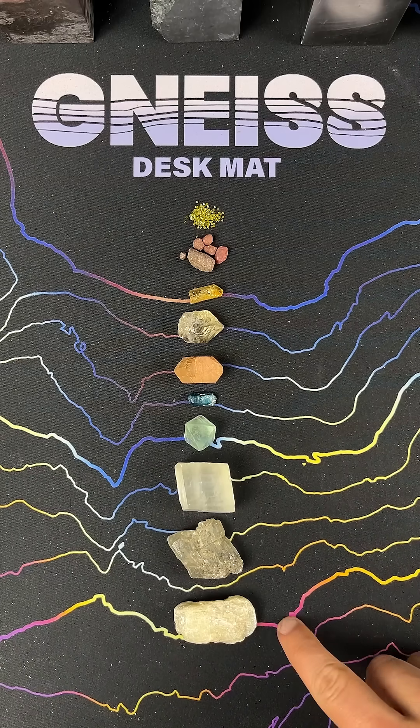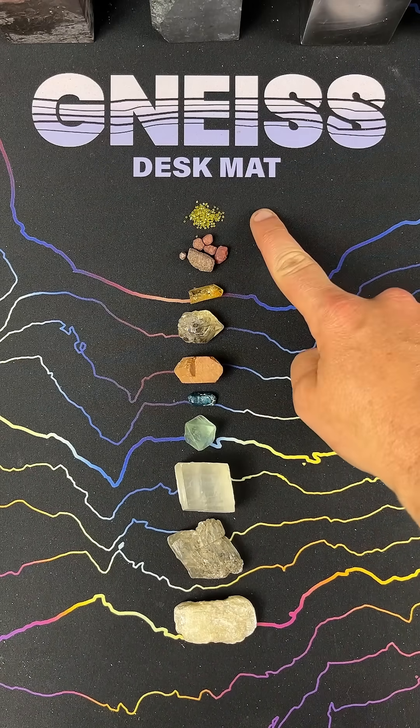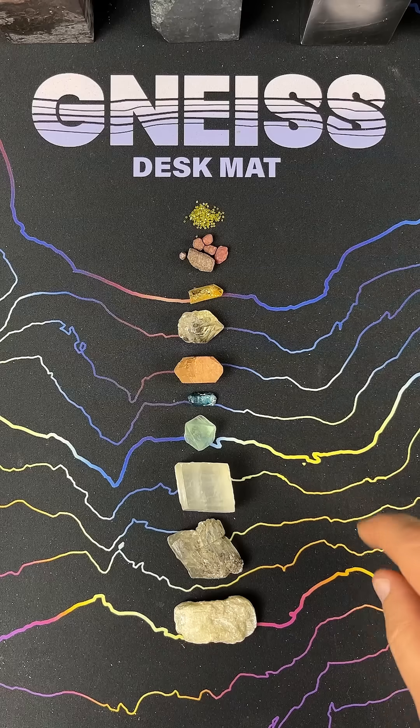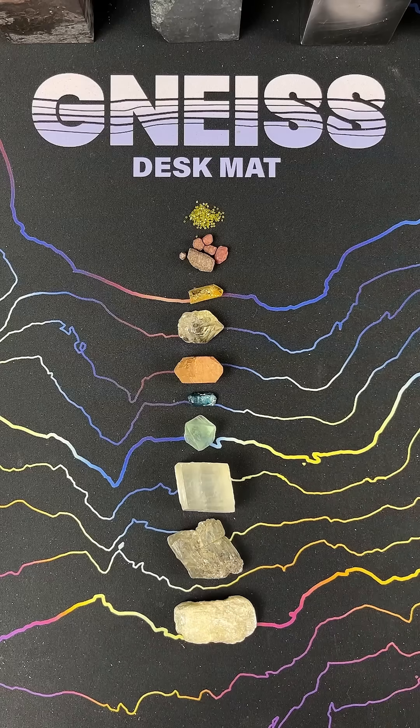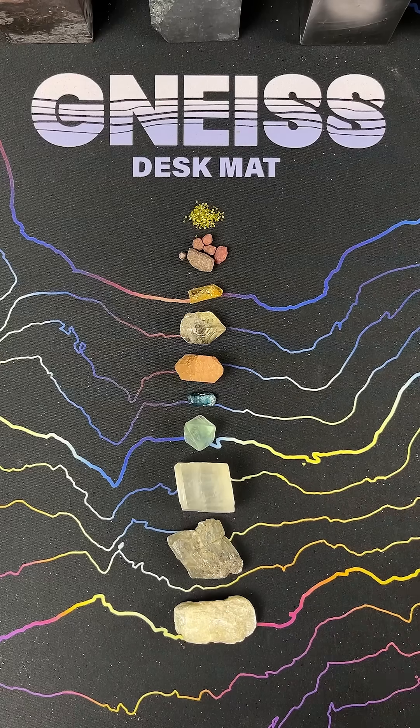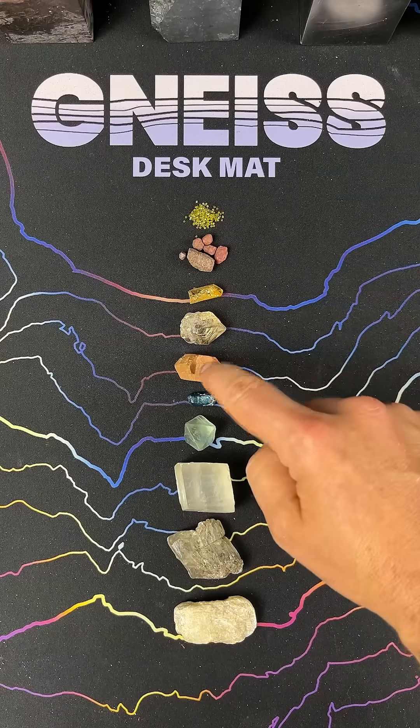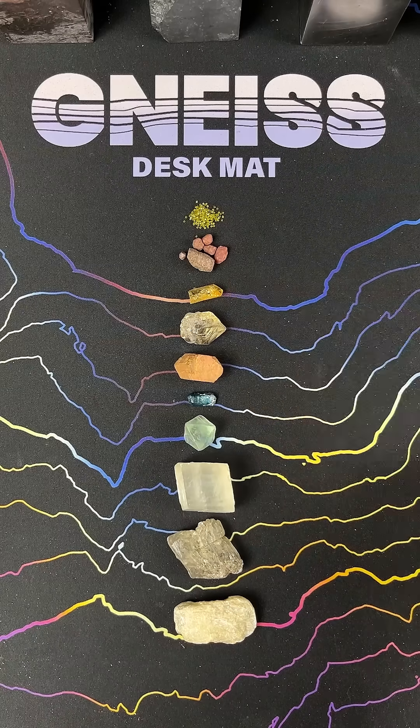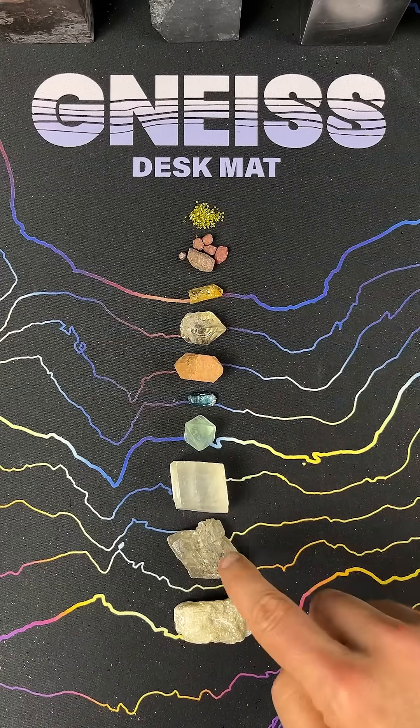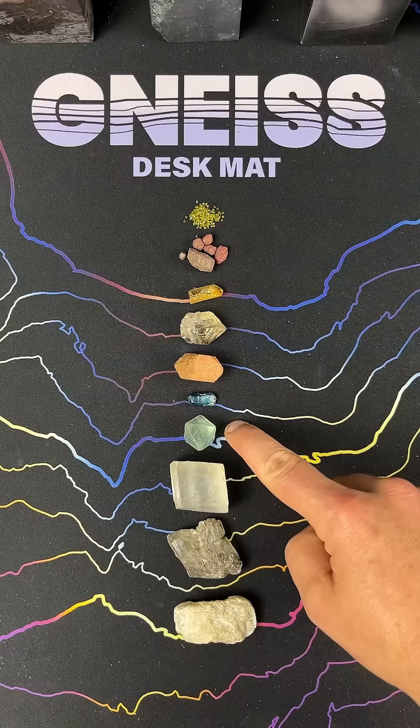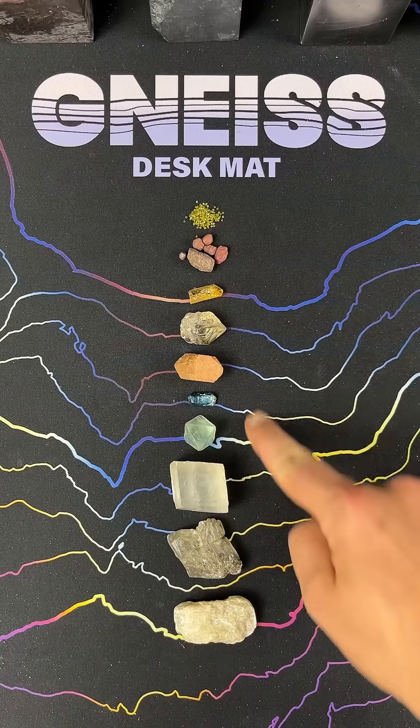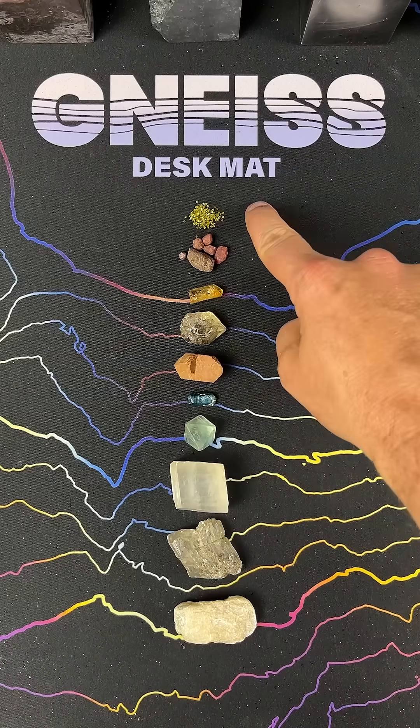These minerals are numbered from 1 to 10, with diamond being the 10, which is as high as it goes. The idea is that any mineral can scratch any number less than it, so quartz can scratch feldspar but not topaz. Calcite can scratch gypsum but not fluorite. Topaz can scratch everything below it, and not corundum or diamonds.